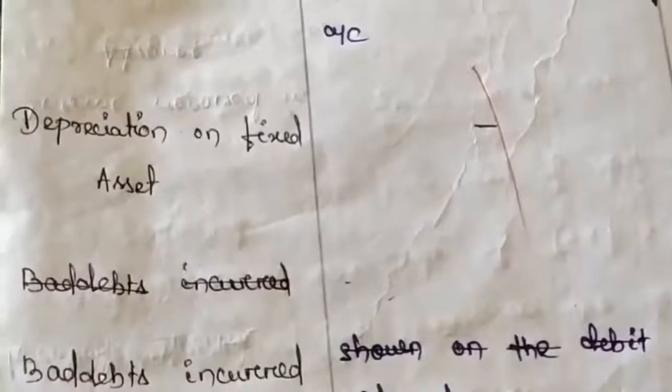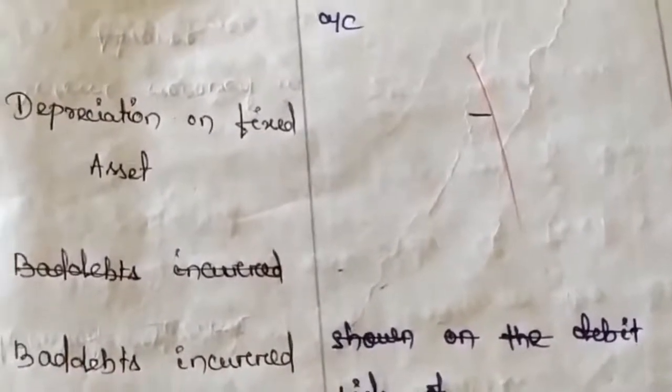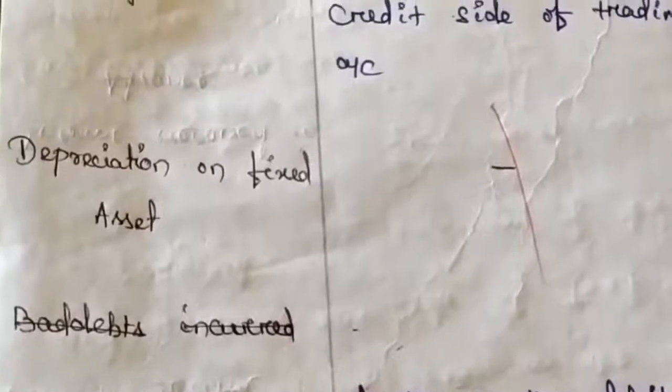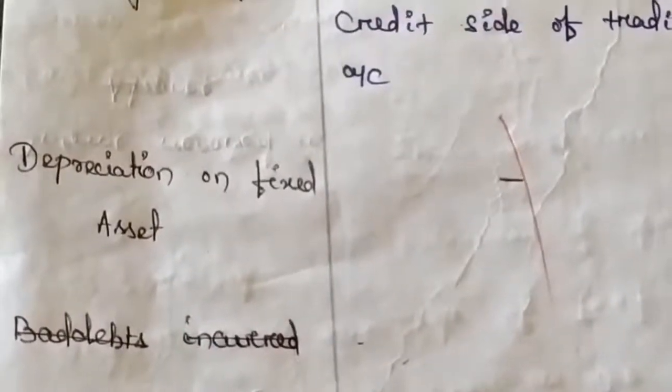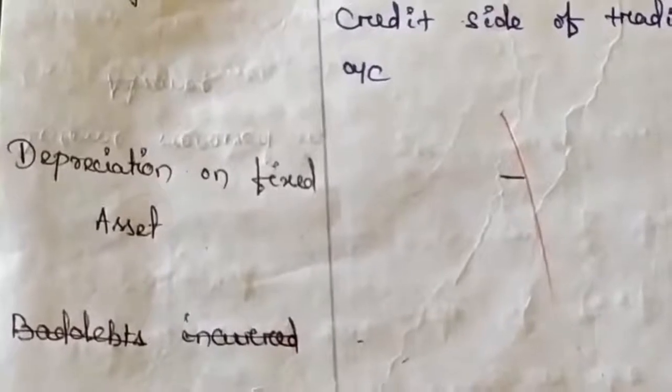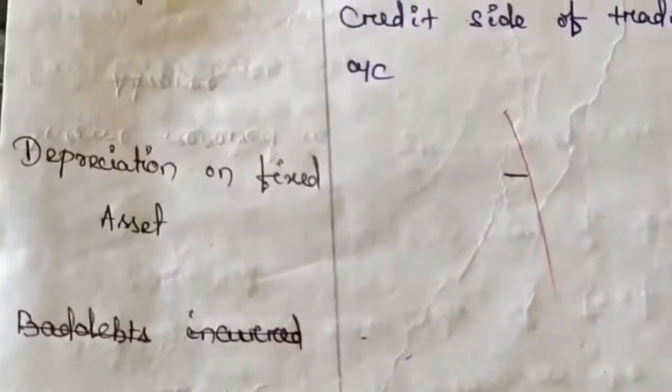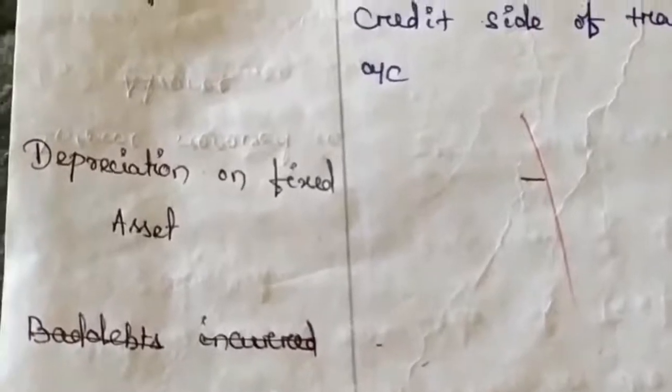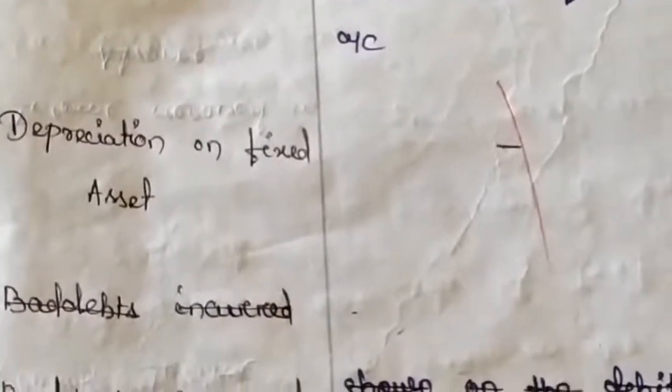Depreciation means the reduction in the book value of a fixed asset due to use and passage of time. By nature, depreciation is an expense — specifically an indirect expense, because it is not related to any production activity or factory work. Being an indirect expense, depreciation is to be taken to the debit side of the profit and loss account.